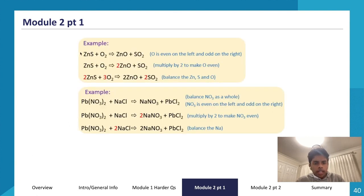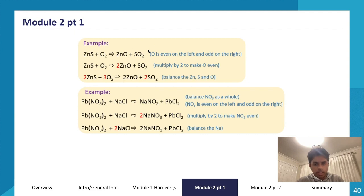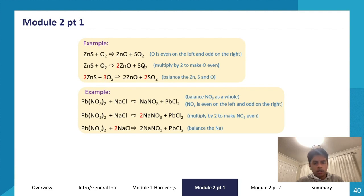Let's look at another example: ZnS + O2 → ZnO + SO2. Checking: 1 zinc on both sides — balanced. 1 sulfur on both sides — balanced. But there are 2 oxygens on the left and 3 oxygens on the right — that's an odd-even disparity. To fix this, multiply the odd side (right-hand side) by 2: I get 2ZnO + 2SO2, giving 4 oxygens on the right. Then balance zinc by putting 2 in front of ZnS on the left.